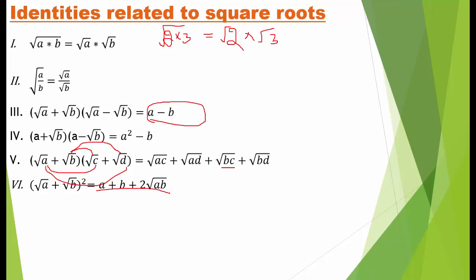Let's revise all identities. First: root(a times b) equals root a times root b. Second: root(a divided by b) equals root a divided by root b. Third: (root a plus root b)(root a minus root b) equals a minus b. Fourth: (root a plus root b)(root c plus root d) equals root ac plus root ad plus root bc plus root bd. Fifth: (root a plus root b) whole square equals a plus b plus 2 root ab.